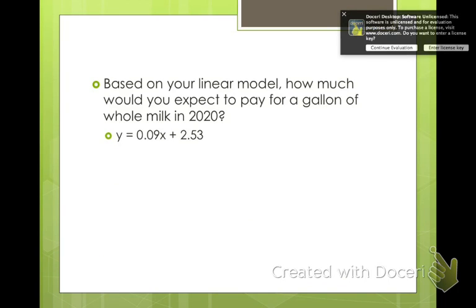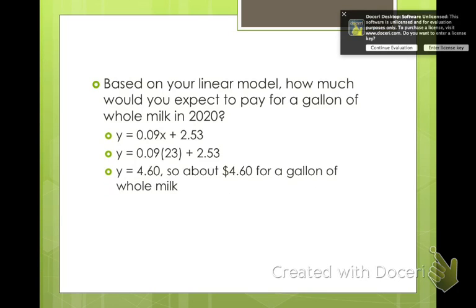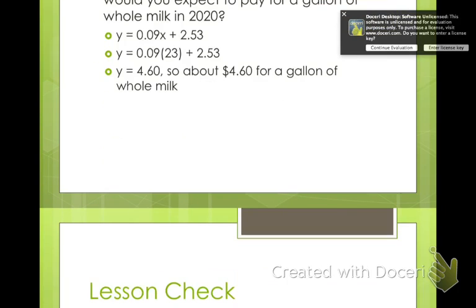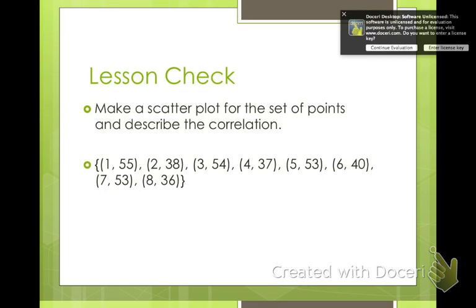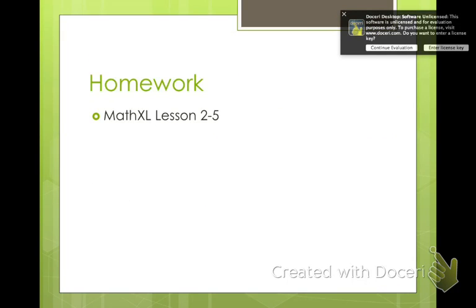So then how much are you going to pay for a gallon of whole milk in 2020? Again, that's 23 years later. Plug it in, simplify. You'll pay about $4.60 if this trend continues. Okay, so go ahead and make a scatter plot of this below and describe the correlation. Is it a strong positive, strong negative, weak, or is there no correlation at all? Check that with your partner. Your homework is lesson 5. Have a good night.